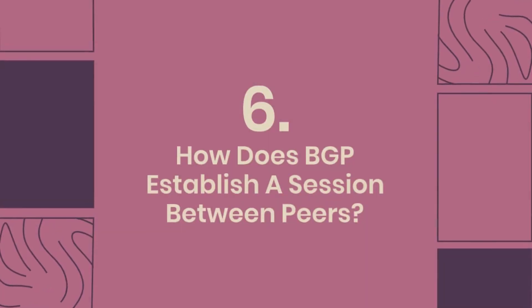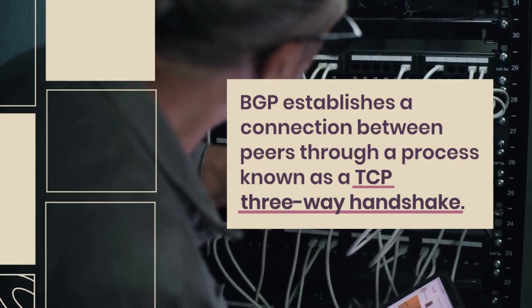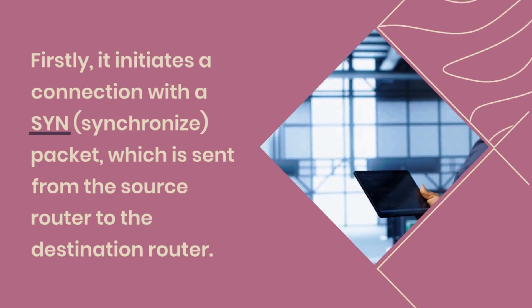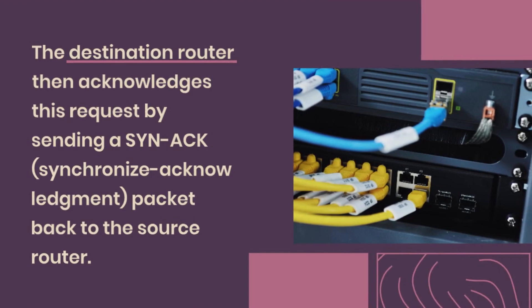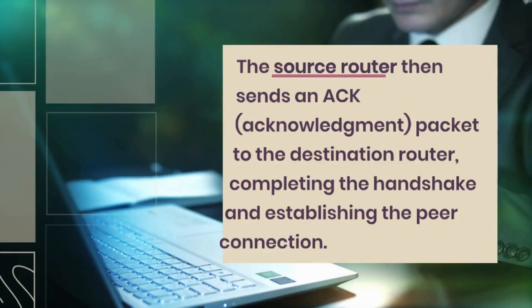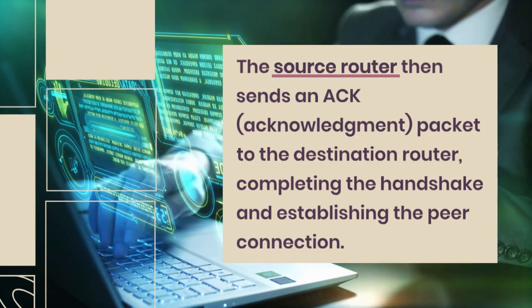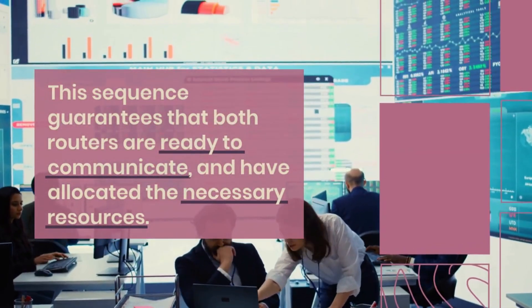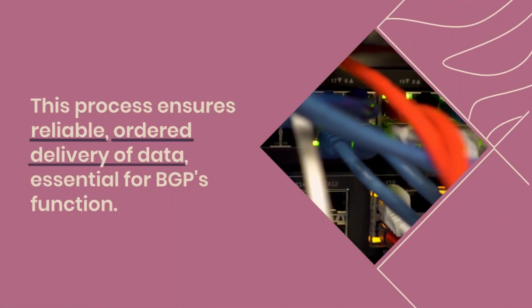How does BGP establish a session between peers? BGP establishes a connection through a TCP three-way handshake. First, it initiates a connection with a SYN (synchronize) packet sent from the source router to the destination router. The destination router acknowledges by sending a SYN-ACK (synchronize-acknowledgement) packet back. The source router then sends an ACK (acknowledgement) packet, completing the handshake and establishing the peer connection. This guarantees both routers are ready to communicate and ensures reliable, ordered delivery of data, essential for BGP's function.